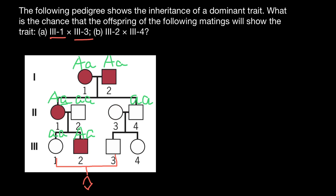We also have to assume that the person who married into their family is phenotypically and genotypically normal, so has two recessive normal alleles (aa). We don't need to build a Punnett square to know that the children of this couple would also be genotypically and phenotypically normal. This person is homozygous recessive, which means their child is also obligate homozygous recessive — that means normal phenotype. So the answer for the first question is zero chance, or 0%, that the child would be affected.